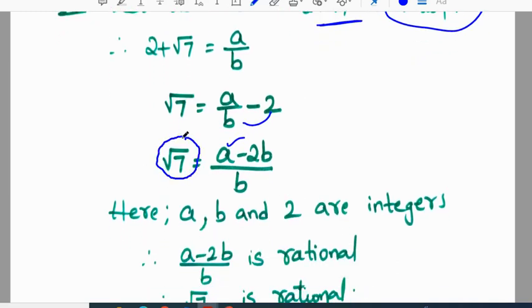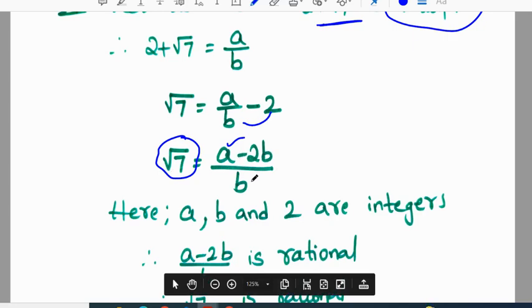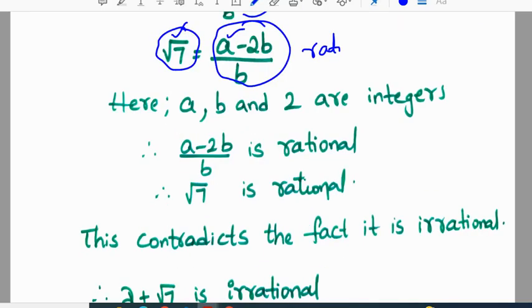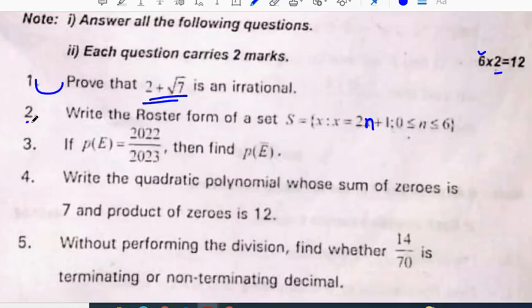You have to write this step students. Right side, left side part should be an irrational number. If it is root 7 or root 2 or root 3, right side should be something like this, which are integers. If they are integers, A minus 2B by B will be a rational number. If right side is a rational number, left side also becomes rational number. This contradicts the fact that it is irrational. Therefore, 2 plus root 7 is irrational number.